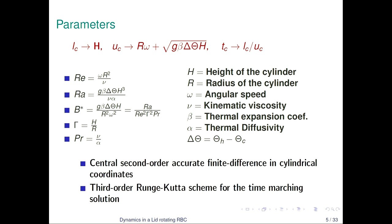The Reynolds number is defined as omega R squared divided by mu. The Rayleigh number uses the usual definition. We also have the beta-star parameter, but it is not an independent parameter; it can be found from the other independent parameters such as Rayleigh number, Reynolds number, gamma, and Prandtl number. The aspect ratio gamma of the cylinder is defined as H by R, which is quite different from aspect ratio defined for standard Rayleigh-Bénard convection systems.